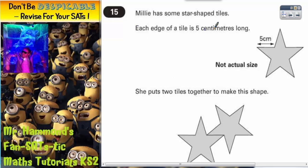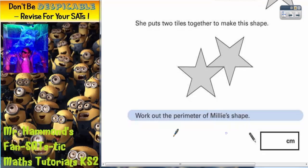Question 15. Millie's got some star-shaped tiles like this. Each edge of a tile is five centimeters long. She puts two tiles together to make a shape, work out the perimeter of Millie's shape.